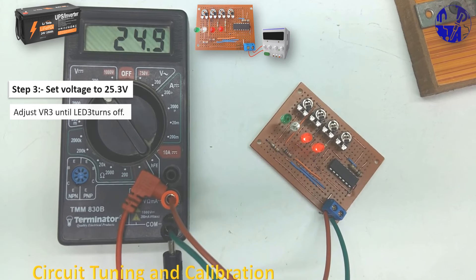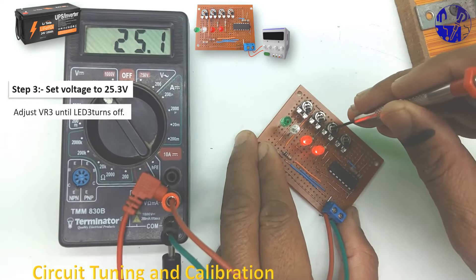At step 3, when the voltage falls below 25.3 volts, LED three will turn off.